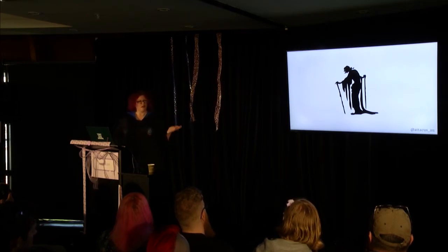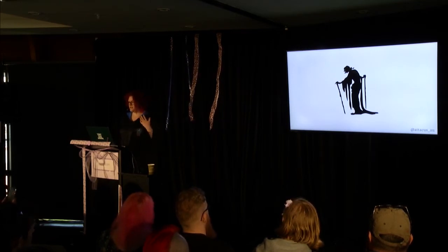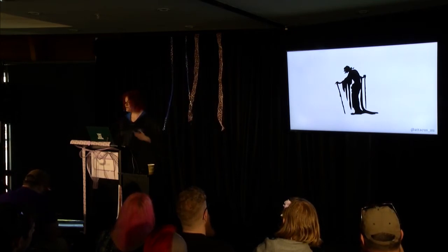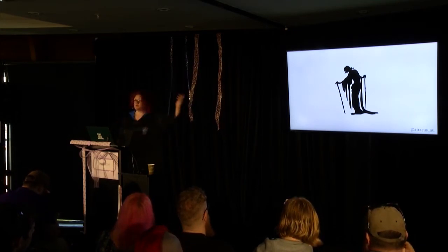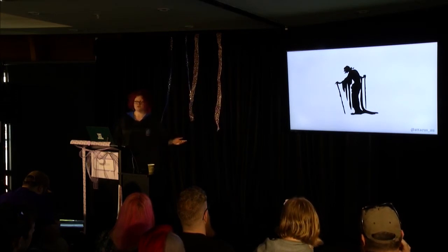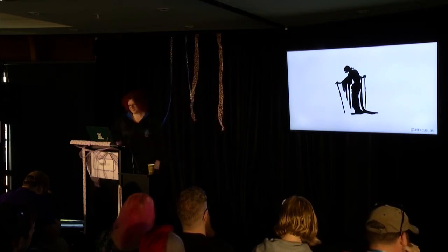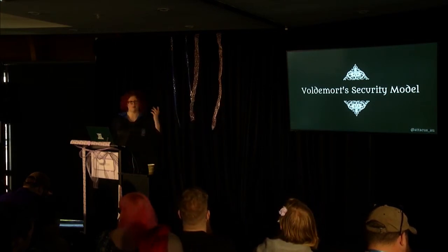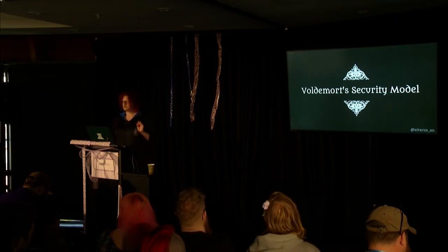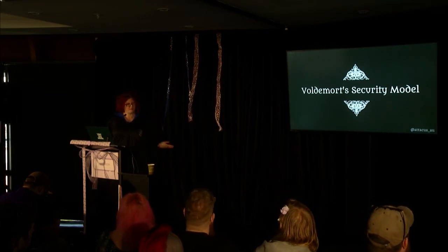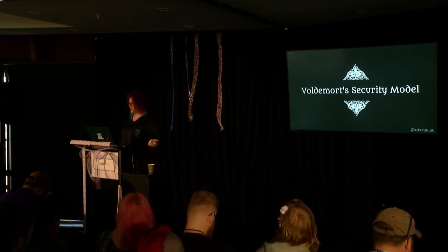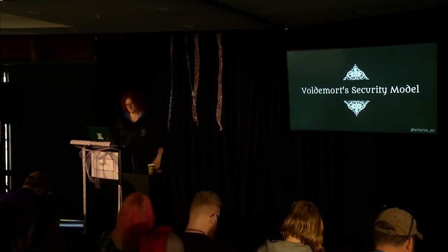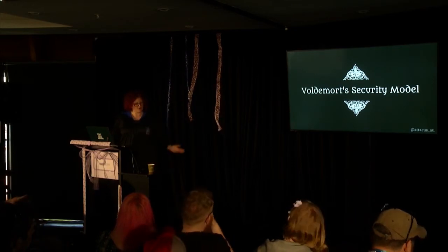So if Dumbledore, thinking like a good wizard, was unable to get into the mindset of a dark wizard — how do they think, and how does that help us do better? Let's compare to Voldemort's security model. Before the Harry Potter books even begin, before his Death Eaters startup had gotten off the ground, Voldemort decided he needed to make backups so he could recover if something bad happened and survive attempts to knock him offline. He did this by creating horcruxes.